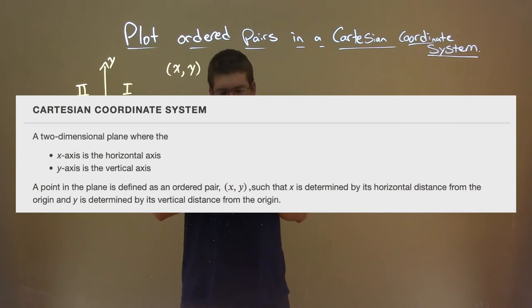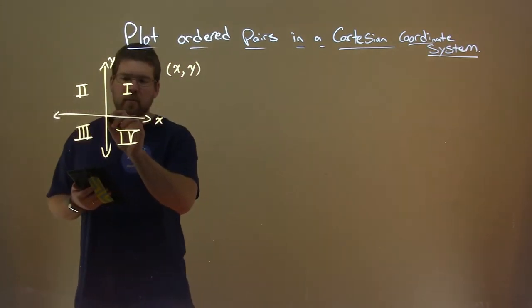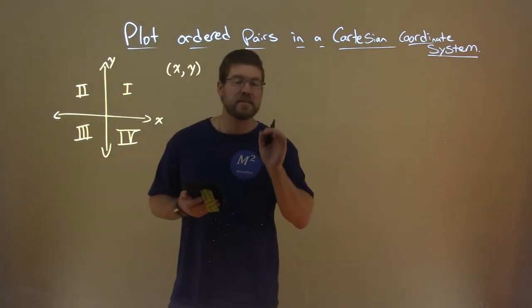A two-dimensional plane where the x-axis is the horizontal axis, y-axis is the vertical axis. A point in the plane is defined as an ordered pair, x comma y, such that x is determined by its horizontal distance from the origin, and y is determined by its vertical distance from the origin. The origin, again, being this point right here where the x and y-axis intersects.